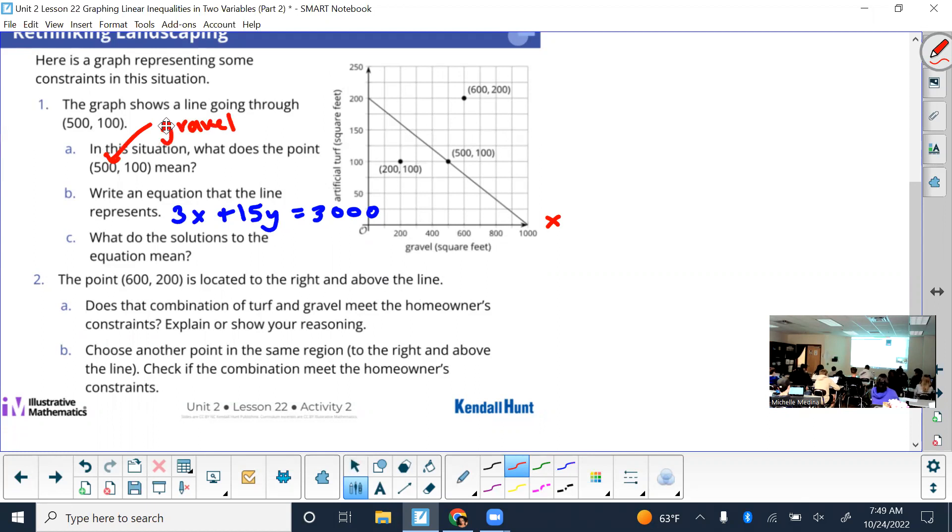So what does the 500, 100 mean? 500 of what? Good, square feet of gravel. 100 what? Artificial turf. Good. So then you can evaluate any solution just like that. And when you plug it in, it should equal to 3,000. What do they mean in the real world? Well, that's how much you can buy, right? Kind of repetitive.